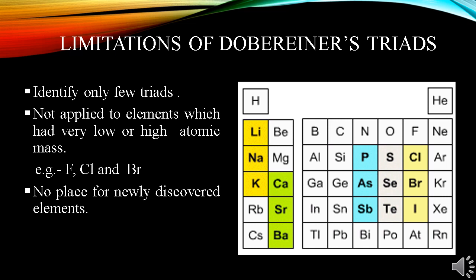Limitations of Dobereiner's triad. Dobereiner could find only few triads from elements known at that time. And he could not even put all the elements known at that time in his triads. The rule of Dobereiner triad could not be applied to the elements which had very low or high atomic mass. Such as if fluorine, chlorine and bromine are put together in a triad in increasing order of their atomic masses, the atomic mass of chlorine is not an arithmetic mean of atomic masses of fluorine and bromine. Newly discovered elements did not fit into the triad. After the advancement of techniques of measuring atomic mass more correctly, Dobereiner's law became obsolete.